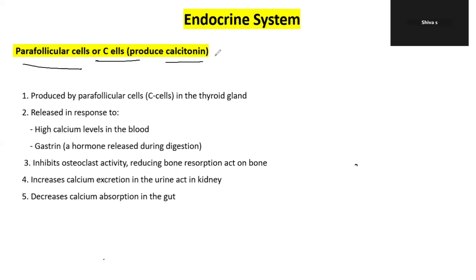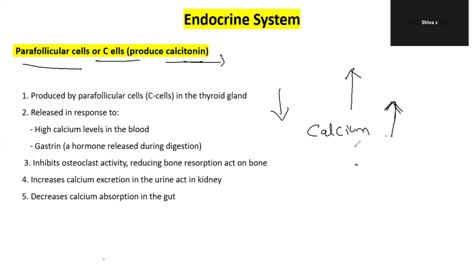Calcitonin regulates calcium levels in the body. When calcium levels are high, this hormone is released. Calcitonin works to lower calcium levels by inhibiting osteoclast activity — meaning osteoclasts do not break down bone — which reduces calcium release from bone into the blood.